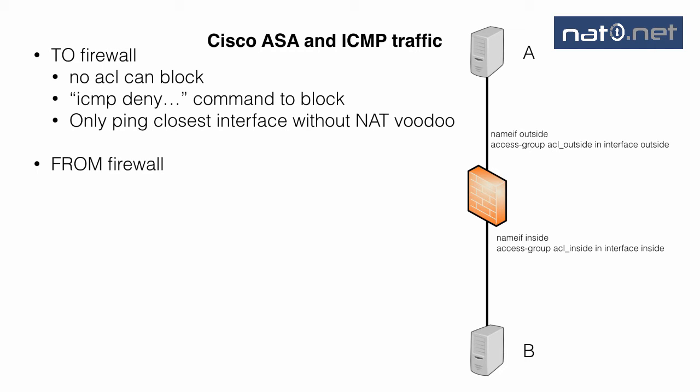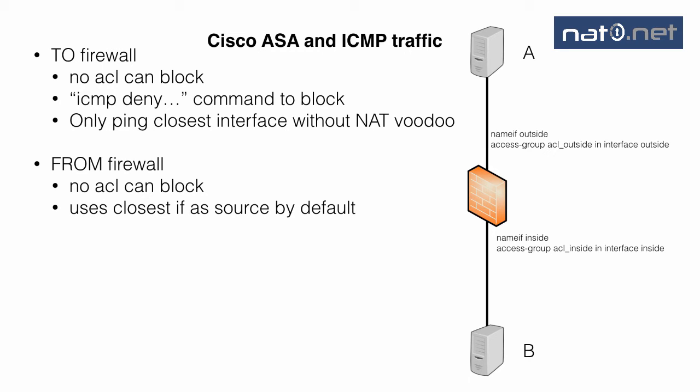Traffic from the firewall cannot be blocked by access lists either. If you for any reason add outbound access lists on interfaces, the same rule applies — you do not have to open traffic outbound to allow ICMP traffic that comes from the firewall. So normally you can ping anything from the firewall.